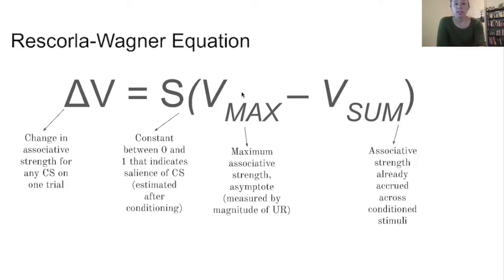So you're taking that V max and subtracting the V sum, where V sum is the associative strength that has already been accrued across conditioned stimuli, so across previous trials of conditioning.